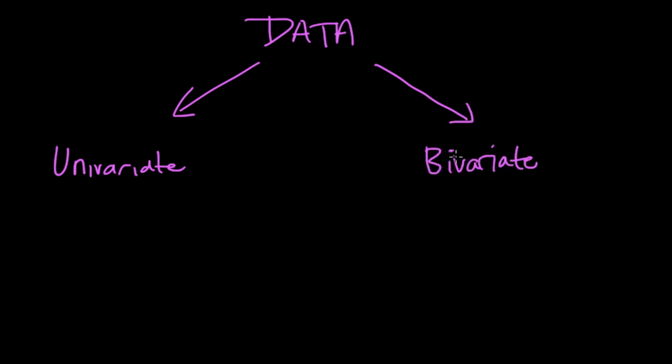And the difference is that what univariate data looks at is some kind of single value. It's not really a comparison. That's what bivariate data gives us. So univariate data is a single value or list of values, but it's not making a comparison.